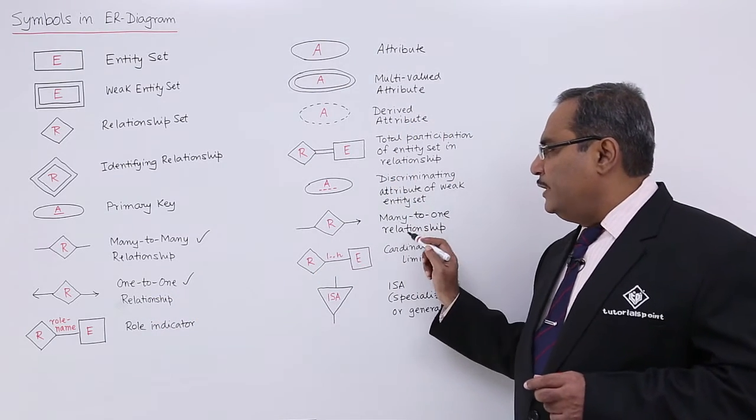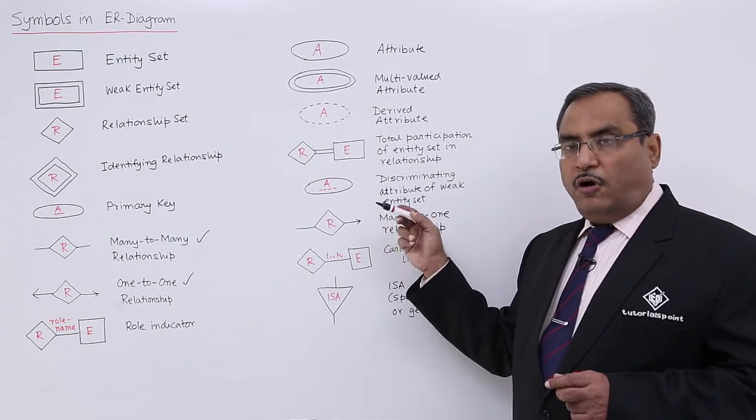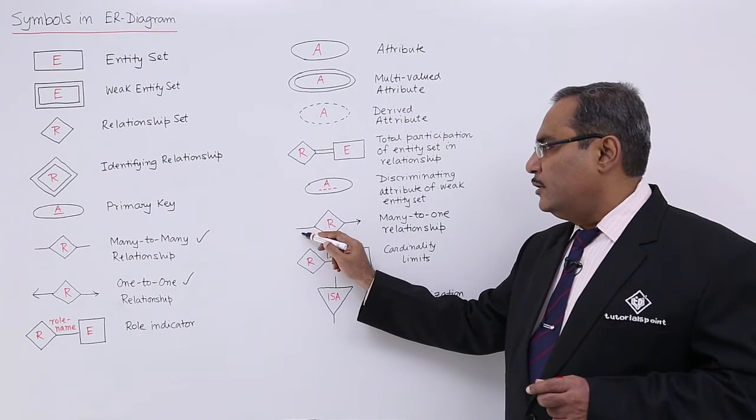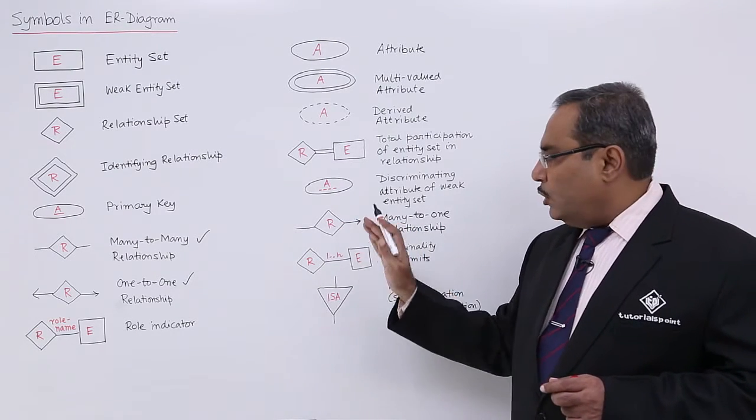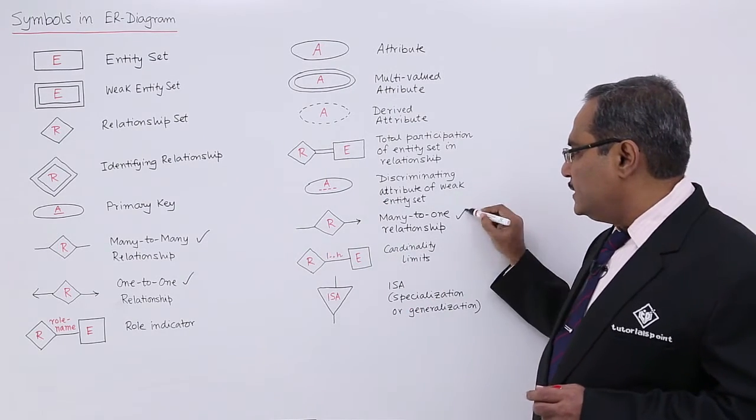In case of many-to-one relationship, there will be an arrow from many to one. Obviously, in case of one-to-many relationship, the arrow will be in the opposite direction. Always remember, from many to one, the arrow will be directed.